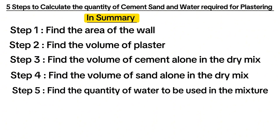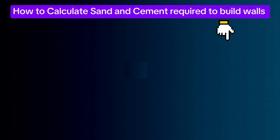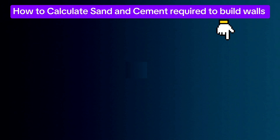That's all about finding the quantity of sand, cement and water required for plastering — I hope you got something from it. If this video was helpful to you in any way, kindly hit that subscribe button. Watch the next video about how to calculate the quantity of sand and cement required to build walls, for block work and brick work.